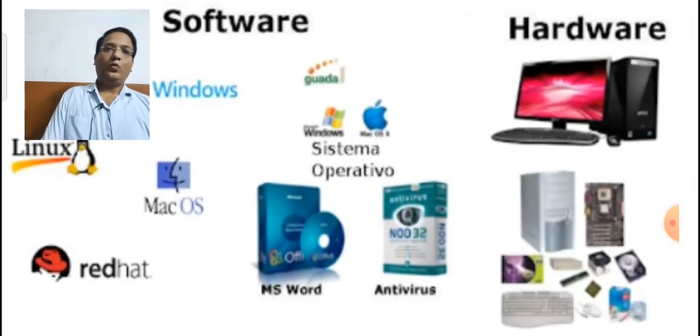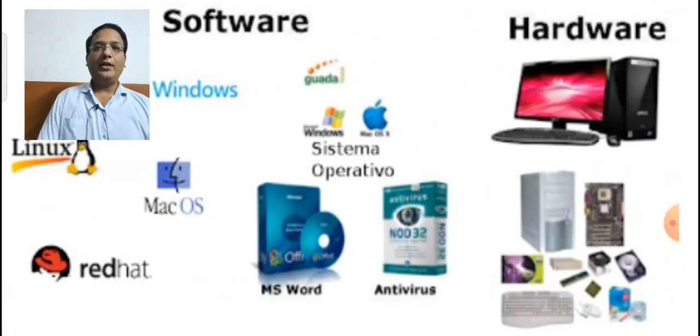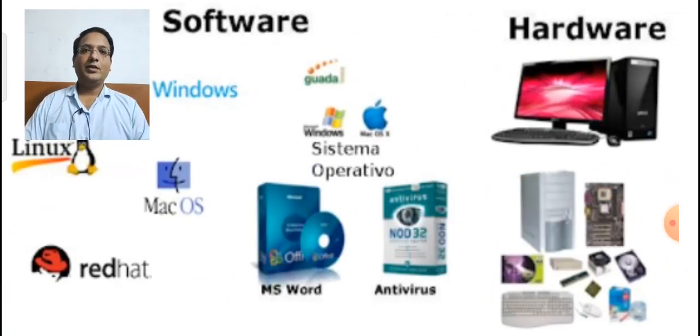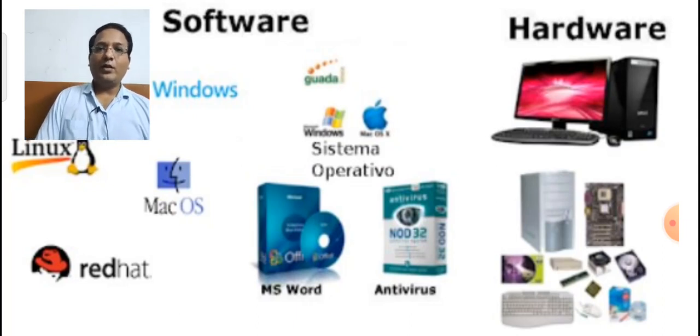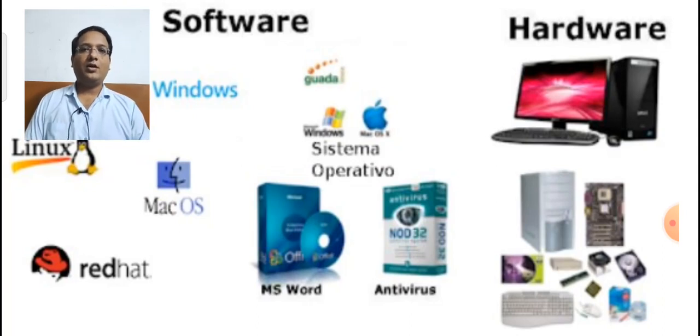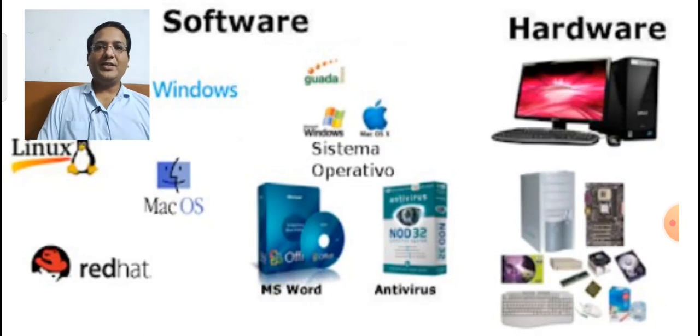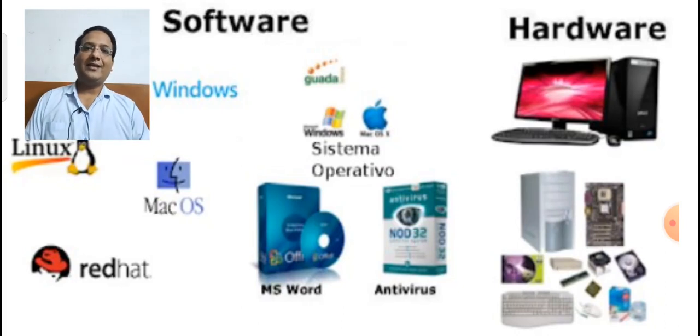Next, what are the software and hardware? The volatile part of the computer which you cannot see or touch are called software. Here you can see some images of software like Linux, Windows, MS Word, antivirus, etc.